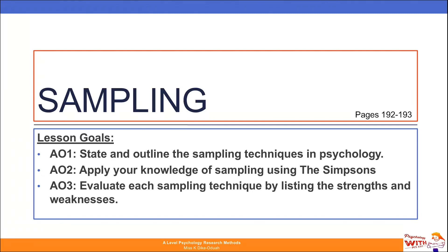We also want to achieve an AO2 application goal of applying our knowledge of sampling using the Simpsons — that is the TV show — and for our AO3 we want to be able to evaluate each sampling technique by listing the strengths and the weaknesses.